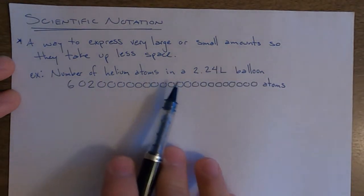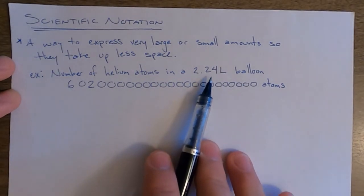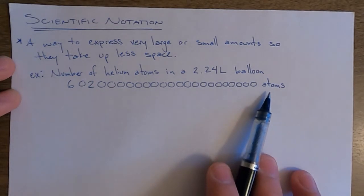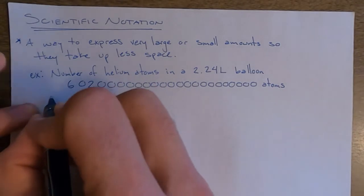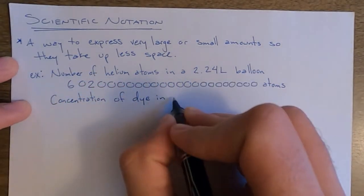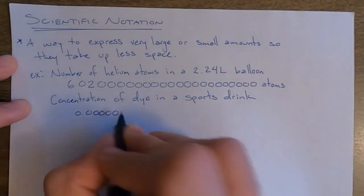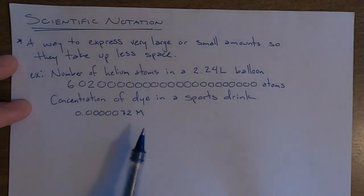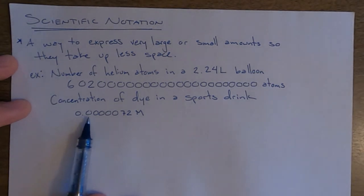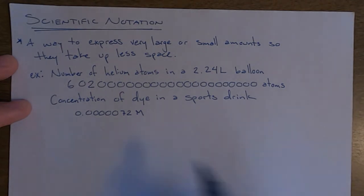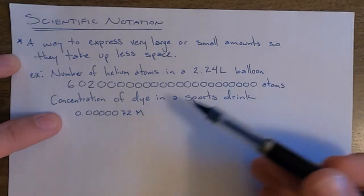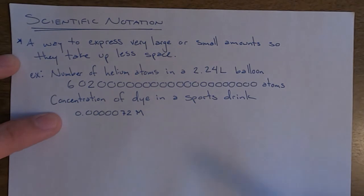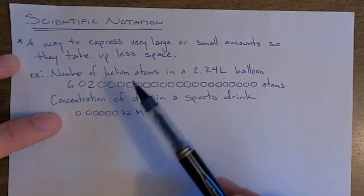For example, the number of helium atoms — if you had a balloon that was 2.24 liters, it would be approximately this many helium atoms. In a lab we did last year, we looked at how much dye was in certain sports drinks. Even the darkest sports drinks still had a concentration reported as 0.000072 M (molar) for concentration units. So there are very large numbers and very small numbers, and these two quantities take up way too much space on paper. Scientific notation is a way to express these same numbers but taking up less space.